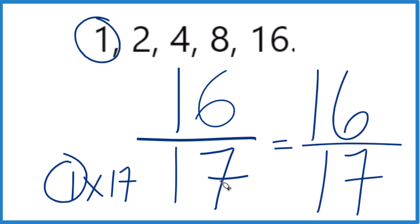What that means is that 16/17 is already simplified. It's in the lowest terms, and we can't reduce it any further.